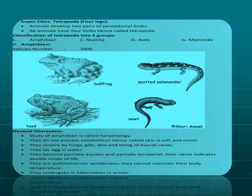There are about 6,000 species of amphibians found around the world. Examples of amphibians shown in the figure include toad, wolf frog, frog, spurred salamander, and newt.